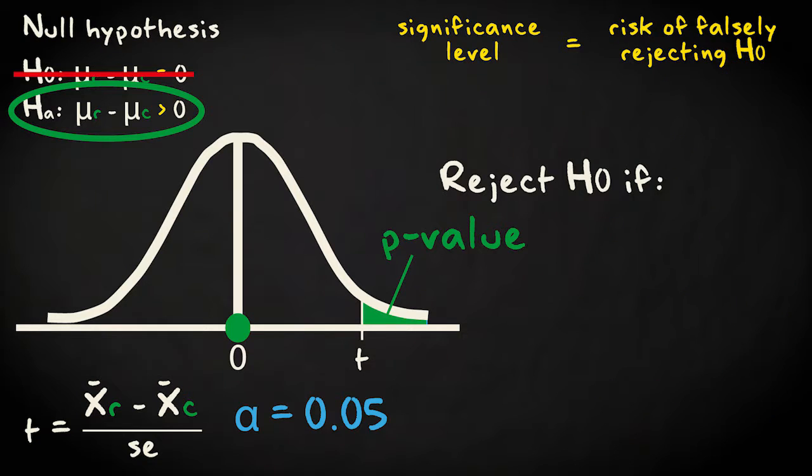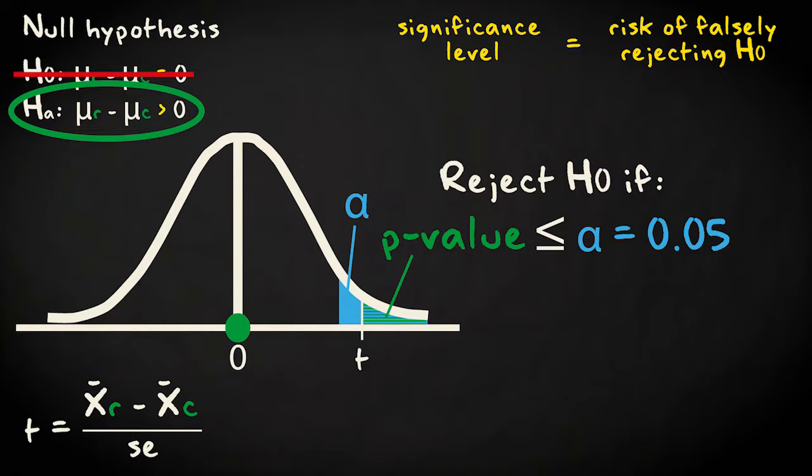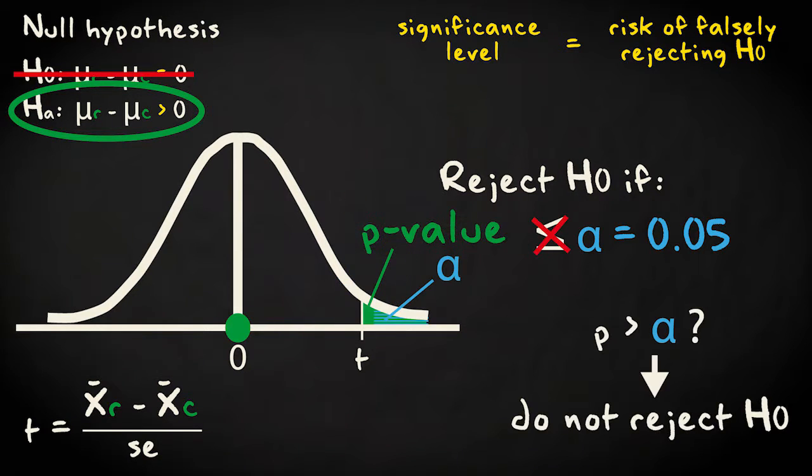We decide if we can reject the null hypothesis by comparing the p-value to the significance level. If the p-value is smaller or equal, we reject the null hypothesis. If the p-value is larger, we cannot reject the null hypothesis. Please note that we never accept the null hypothesis. Failing to reject it is not the same thing as showing it is true.